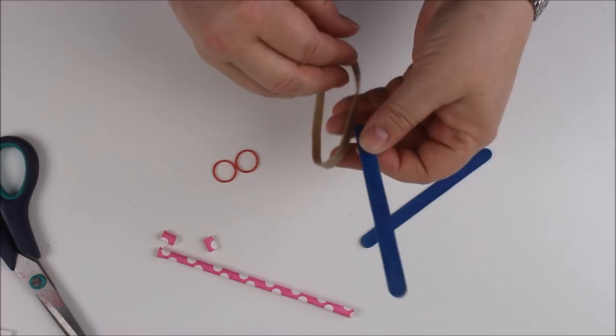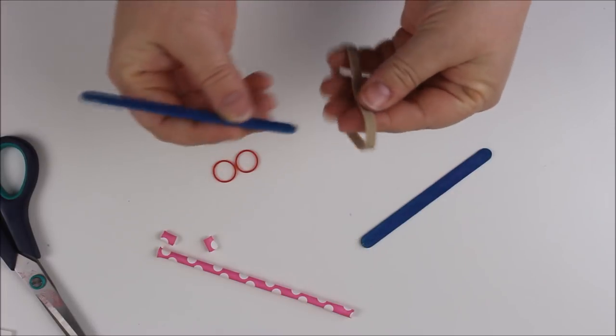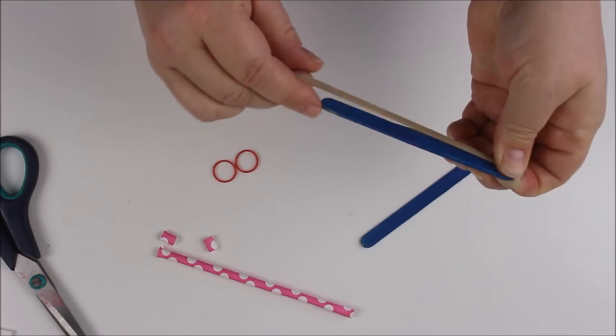To start with we're going to take an elastic band and we're going to wrap it around end to end on the lolly stick.